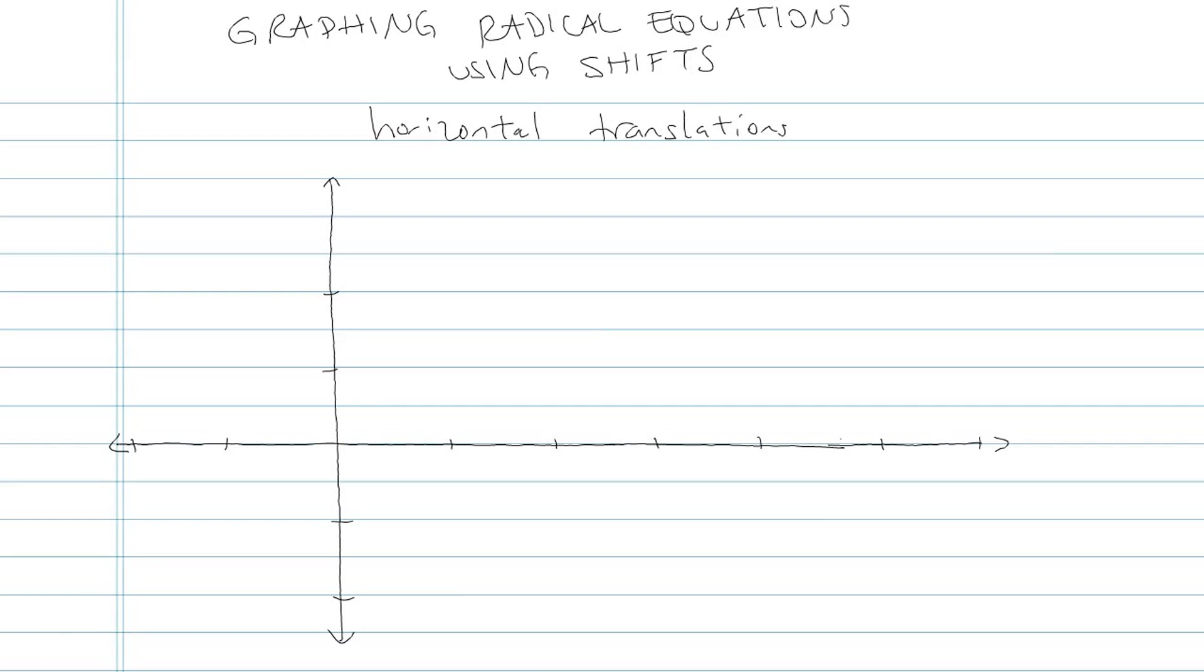We're going to be graphing radical equations using shifts, focusing on horizontal translations, moving or shifting your parent graph either in the right or left direction. So before we do any shifts, let's talk about that parent.